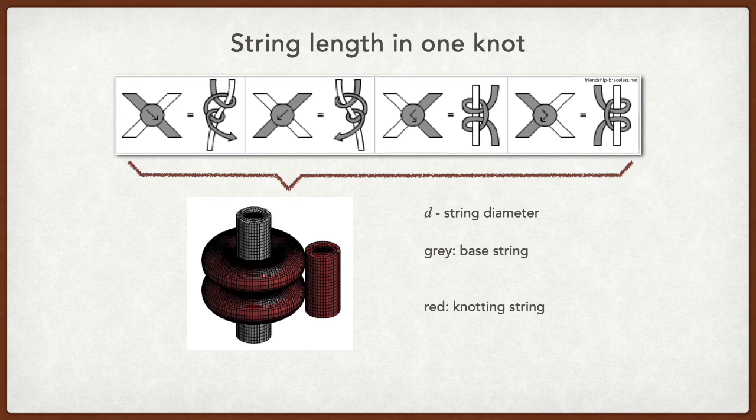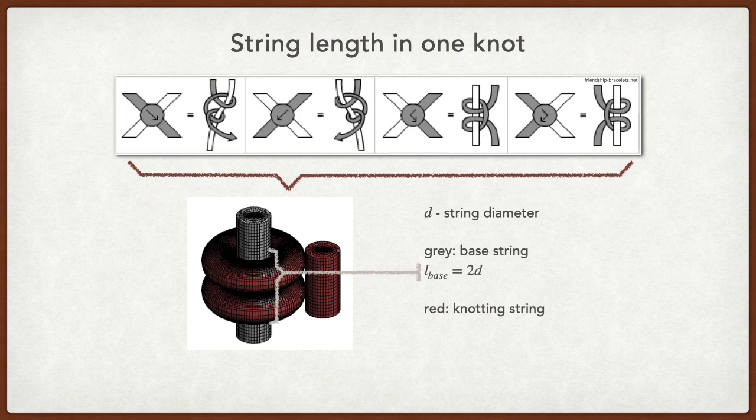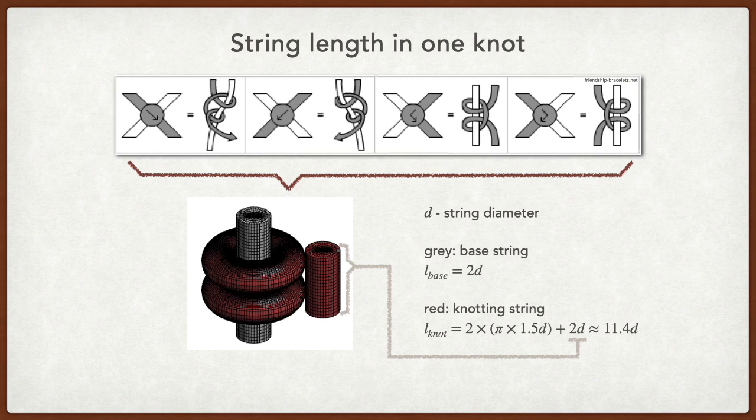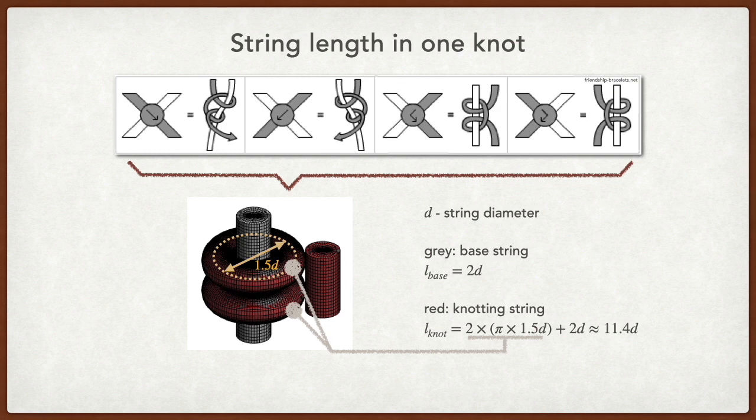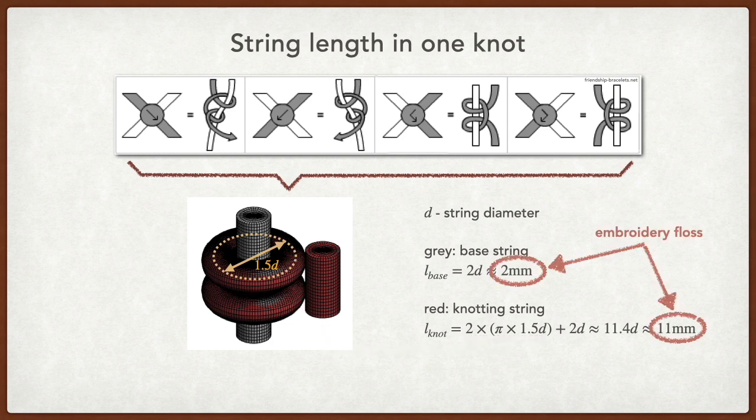The gray color is for the base string, and the red color is for the knotting string. The length of the base string used in one knot is then 2d, and this is also the length of the linking piece of the knotting string. For the two loops in the knotting string, we can model them as two circles with a diameter of 1.5d, and the circumference of these two circles contribute to the total length of the knotting string. This diameter 1.5d can change depending on how tight or loose you make your knots. The embroidery floss typically has a diameter around 1mm. That means a bit more than 1cm of knotting string goes into one knot, while only 2mm for the base string. This can also be useful when you need to determine whether a scrap is long enough for an alpha pattern.